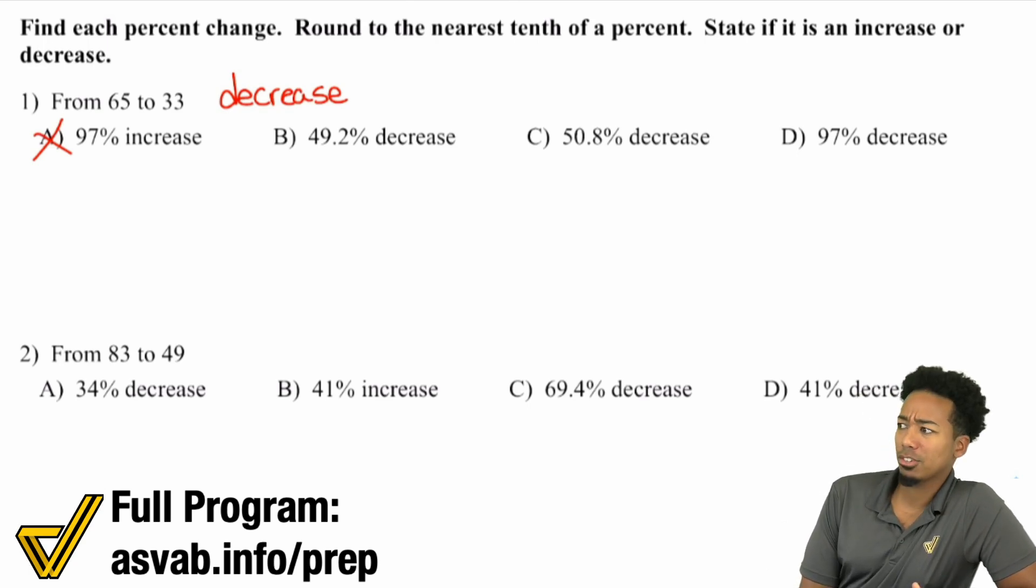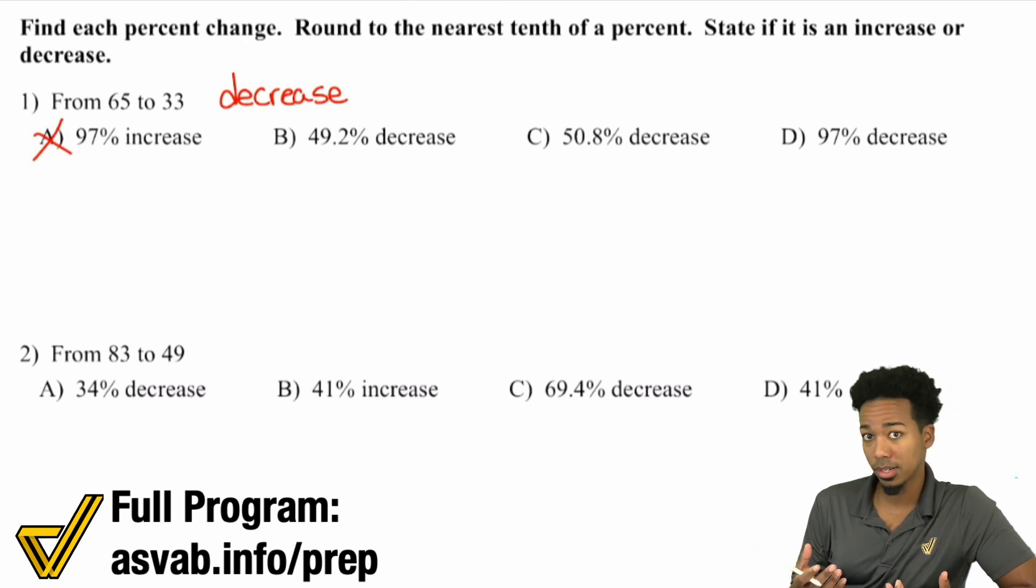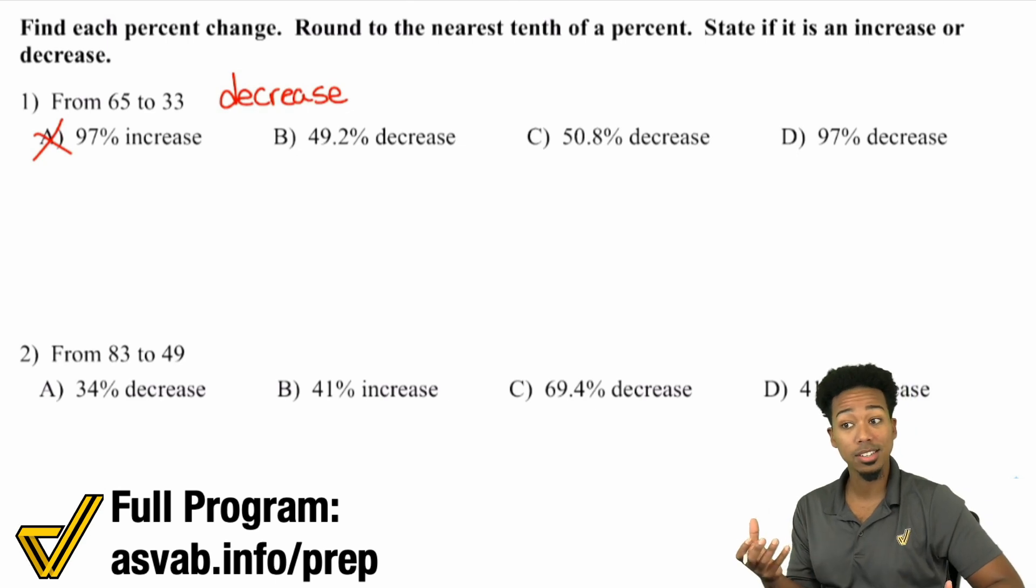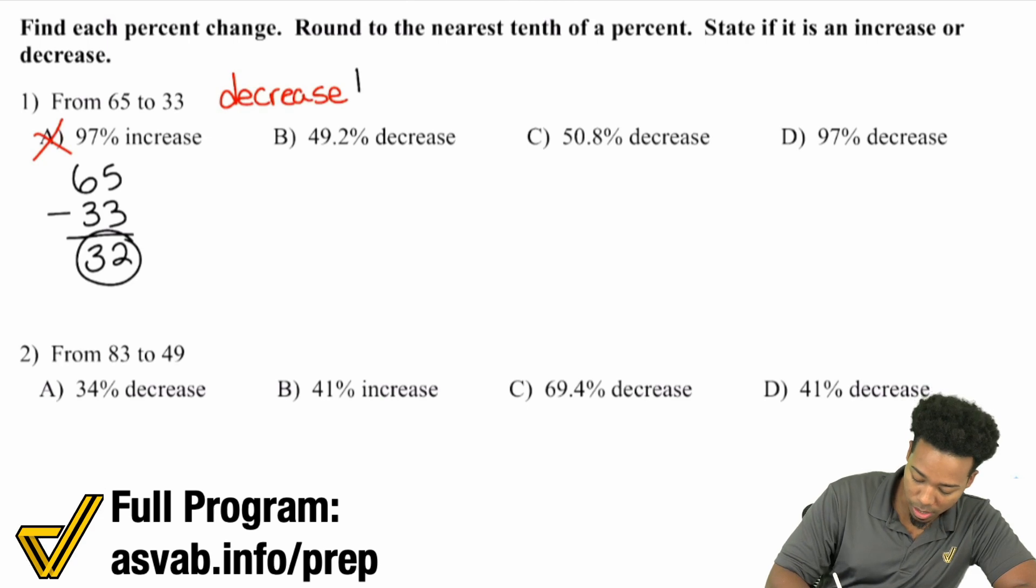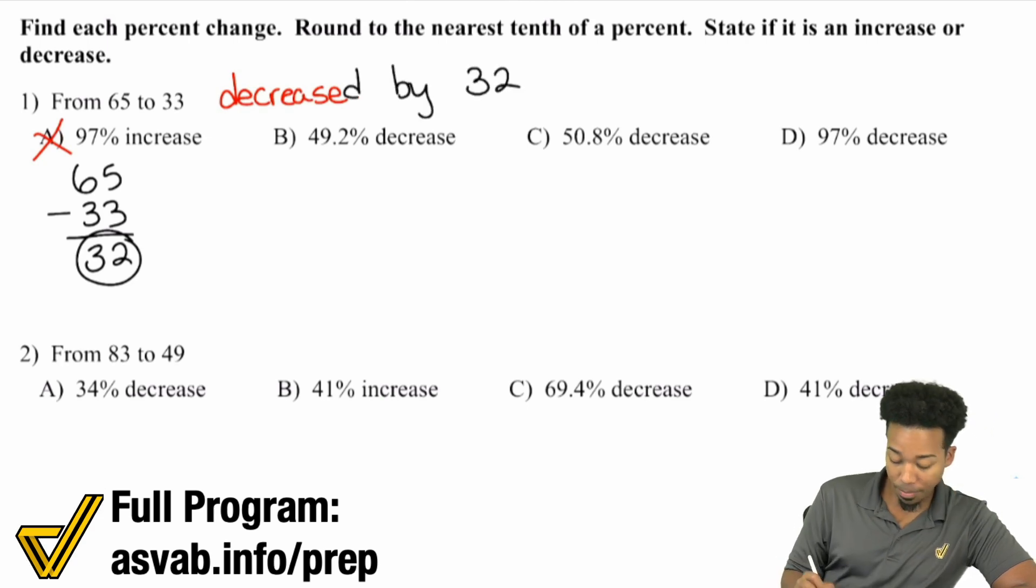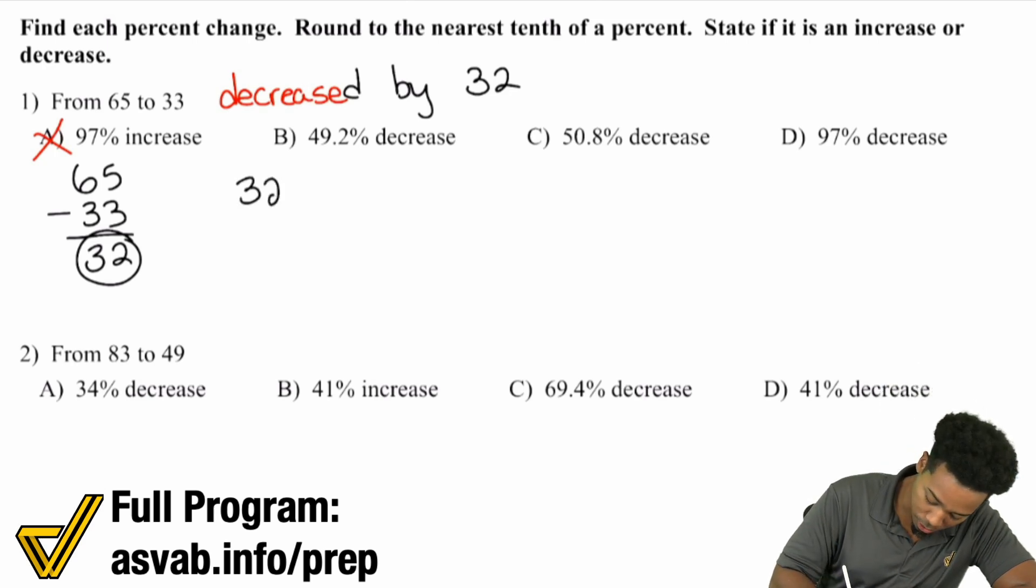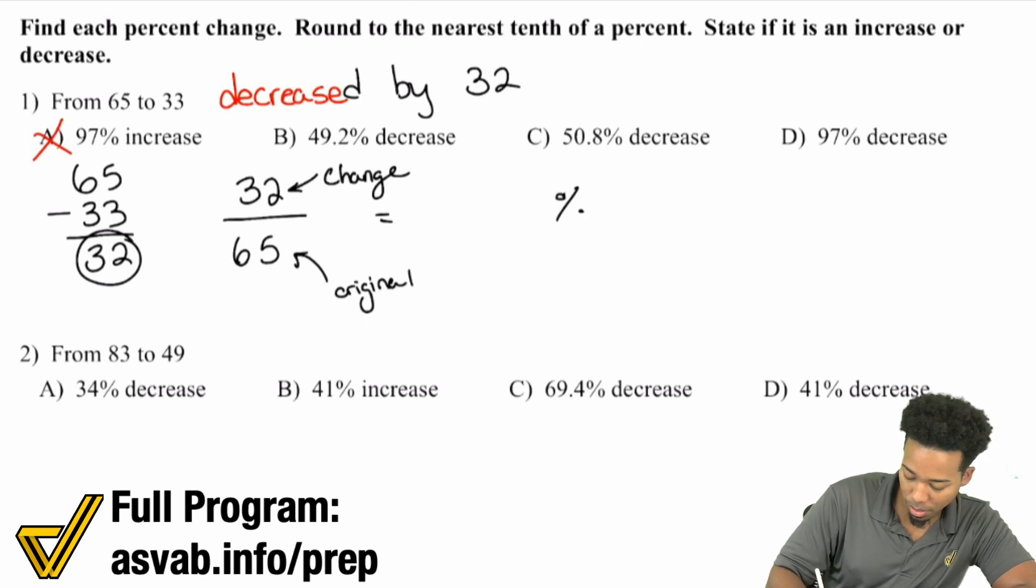The next question is, by how much did it decrease? To find the percent of the decrease, you need to find what that decrease is as a percent. Let's do 65 minus 33, which equals 32. We decreased by 32, not by 32%. To find out what that is as a percent, take the 32—this is the change—and divide that by the original number, 65.